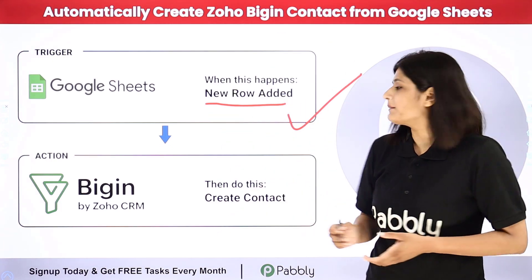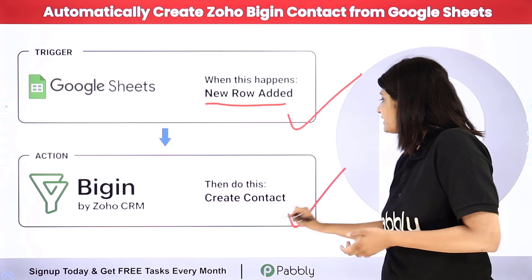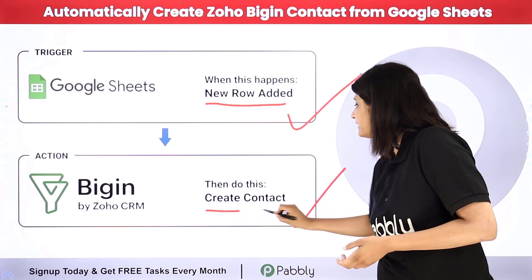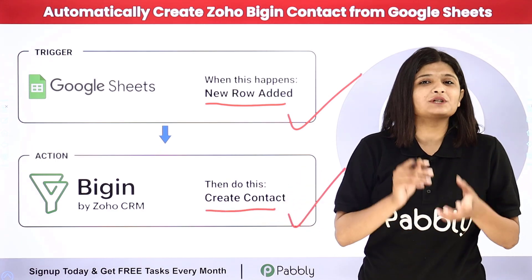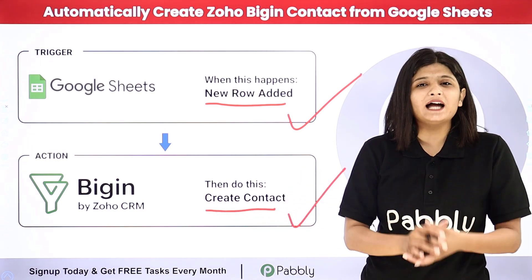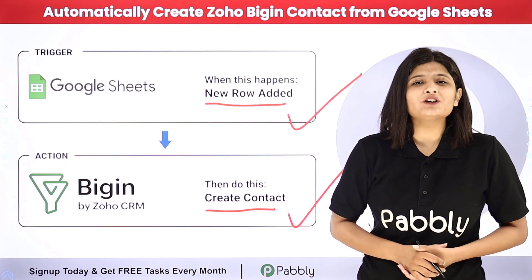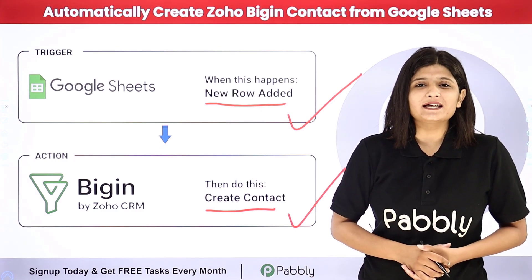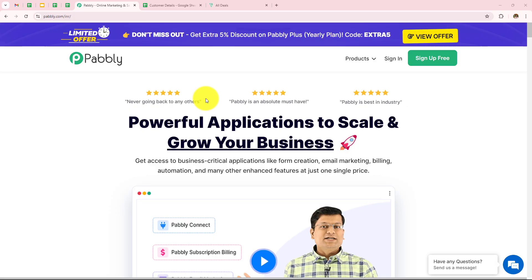In my Action application I will take Zoho Begin, where the contact will be created automatically as soon as the new row is added in Google Sheets. If you want to learn this amazing automation step by step, let me take you to my screen.